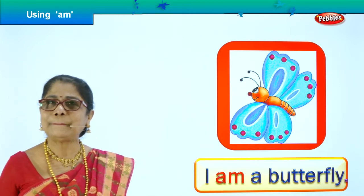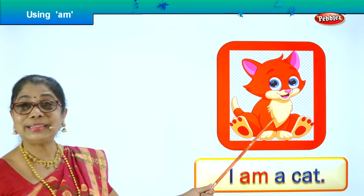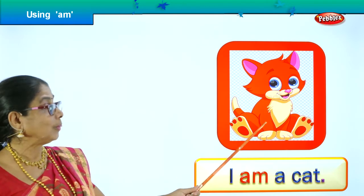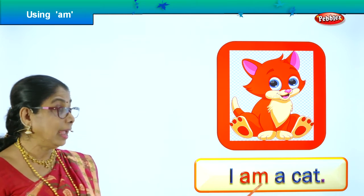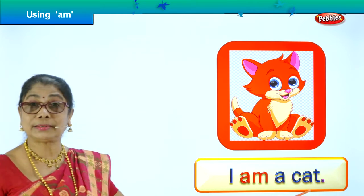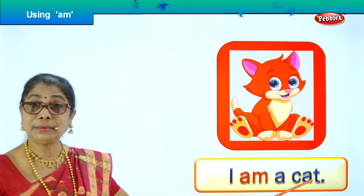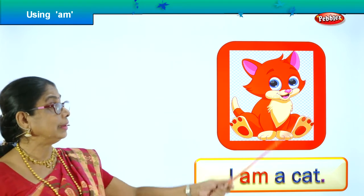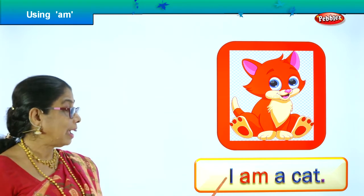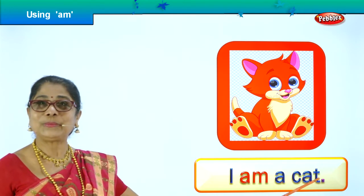Let's go to the next picture. Look — like this pussy cat. What does she say? She says: 'I am a cat.' The cat is very happy to say, with a smile: 'I am a cat.'